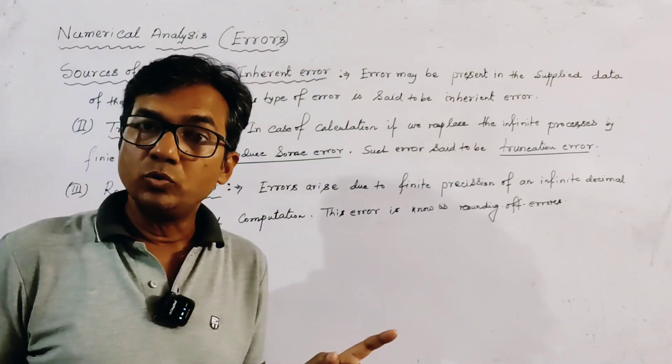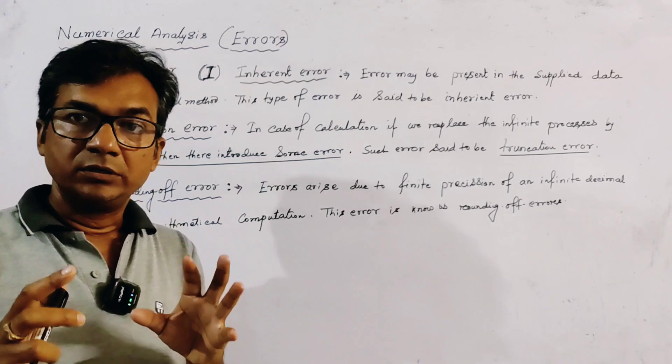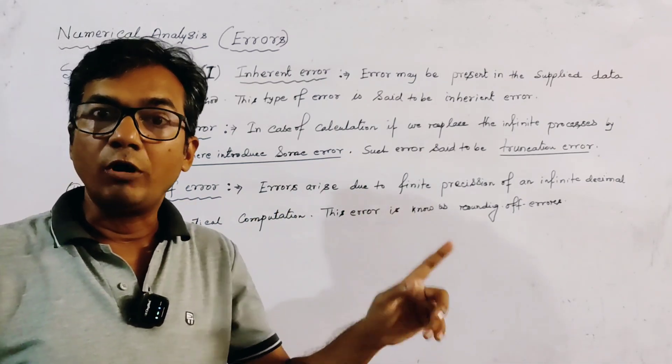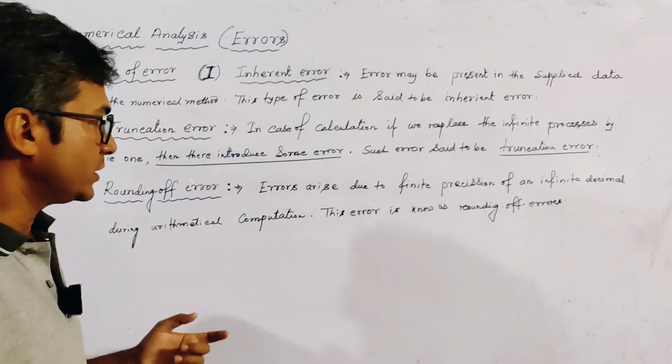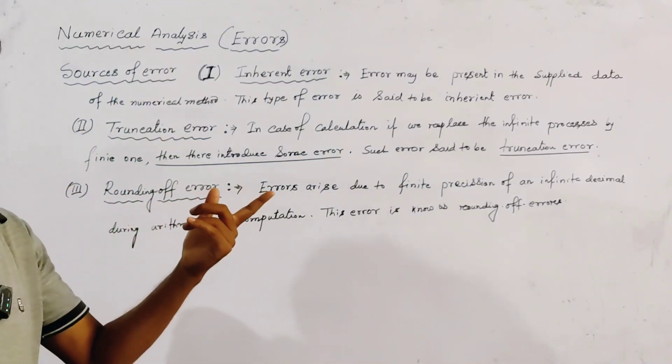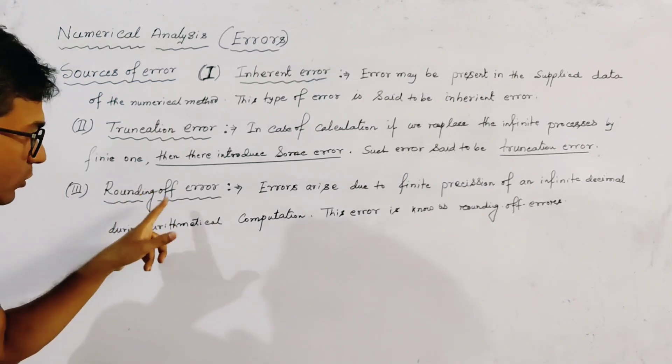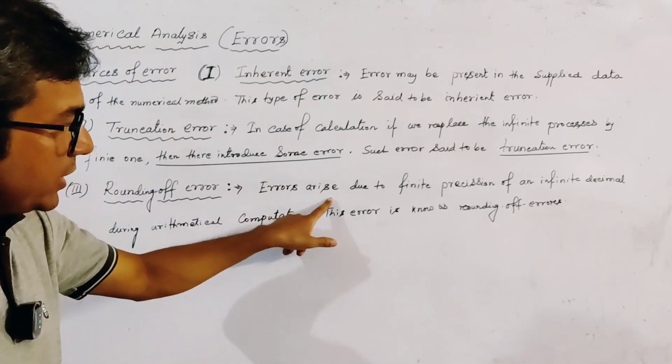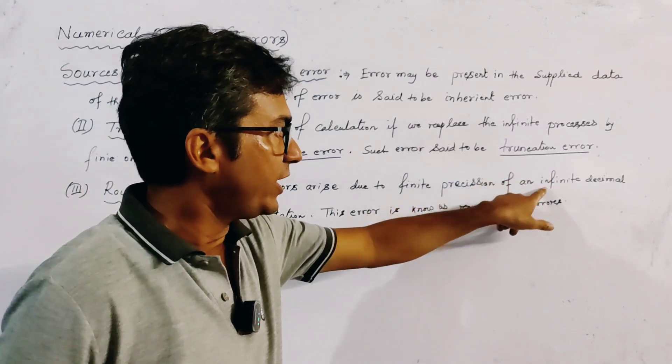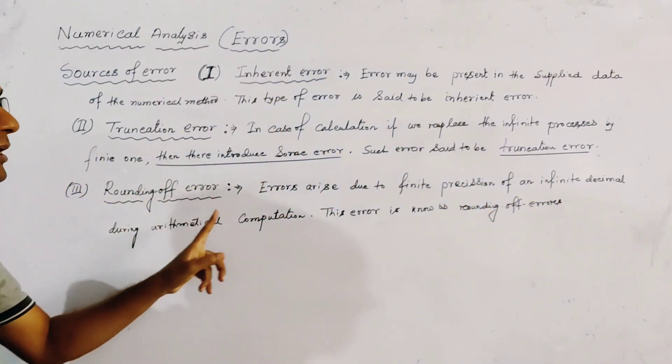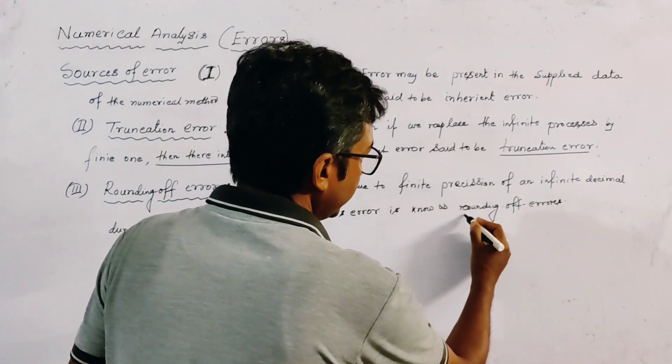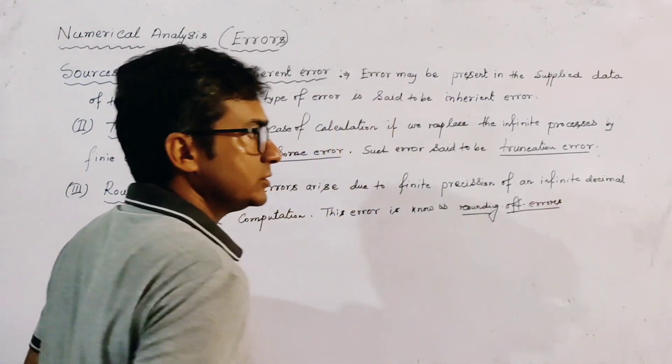We must have to find the finite number of decimal places of any number. So here the rounding error must occur. And the rounding error is the error that arises due to finite precision of an infinite decimal during arithmetical calculation. And this type of error is said to be rounding of error.